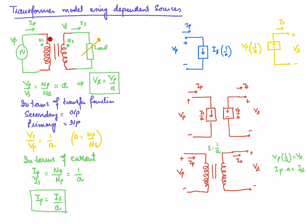The number of turns on the primary side is N1 and on the secondary side is N2. The voltage applied on the primary side is Vp and on the secondary side is Vs. When you connect a load to the transformer, current flows through the load — that is the secondary current — and there is a corresponding primary current. When you increase the load in the secondary, meaning when the current in the secondary winding increases, the current in the primary winding also increases.